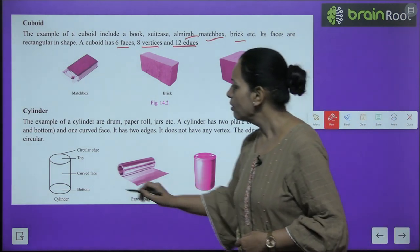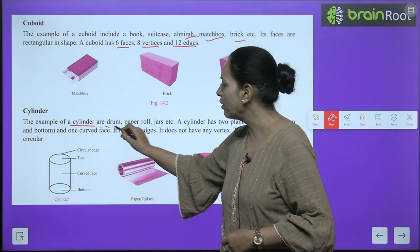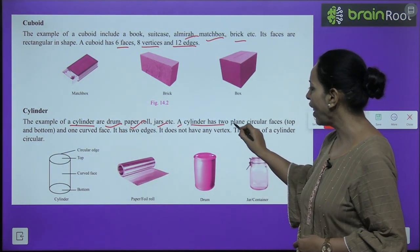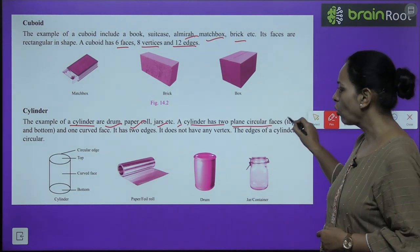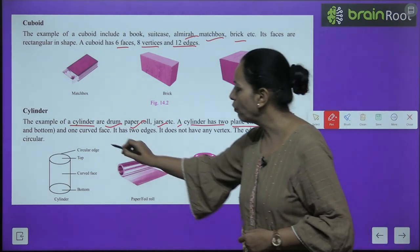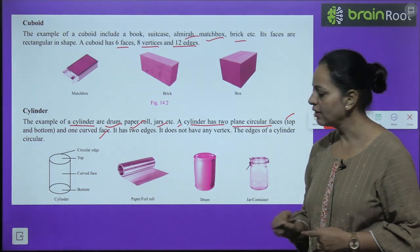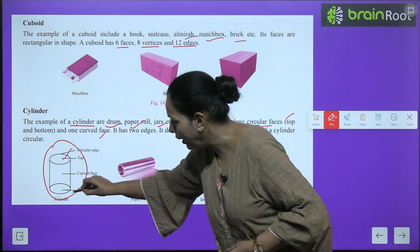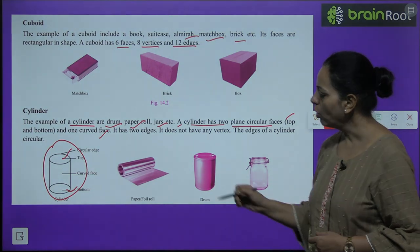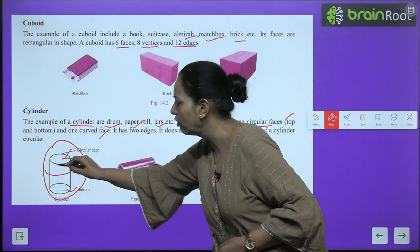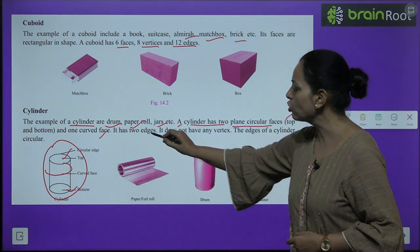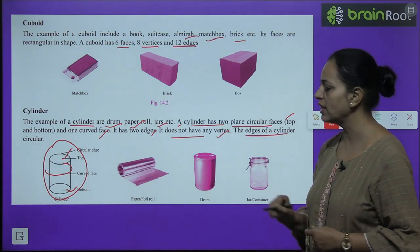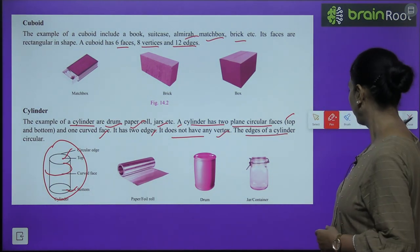Cylinder: The examples of a cylinder are drum, paper roll, jars, etc. A cylinder has 2 plain circular faces - top and bottom - and 1 curved face. You can see in the cylinder there is one top, one bottom, and this is curved. So it has 2 edges. It does not have any vertex. The edges of a cylinder are circular.